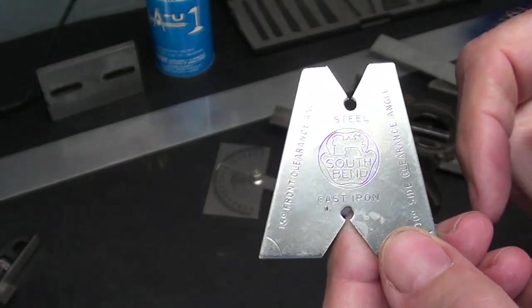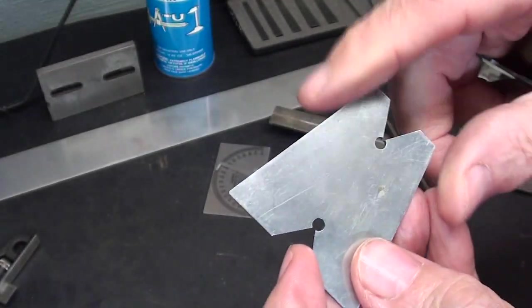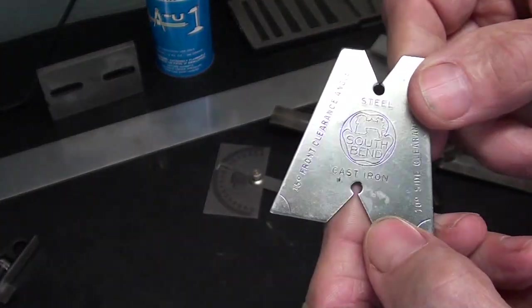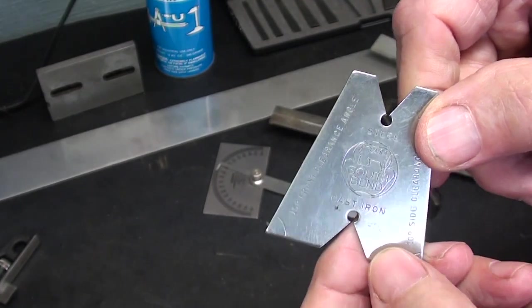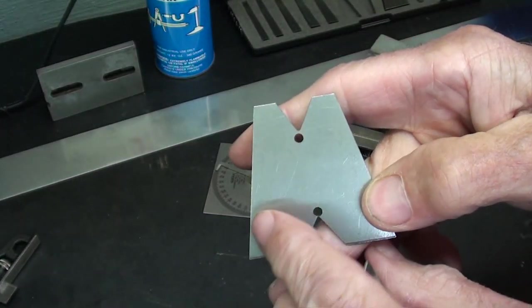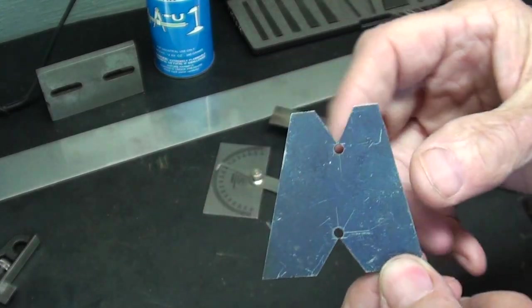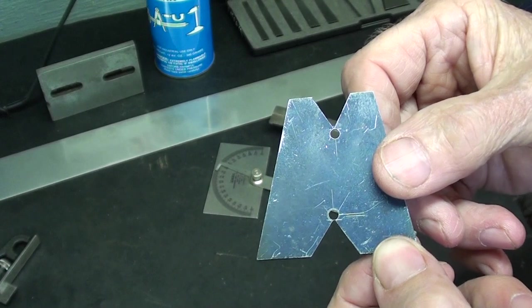This is an original South Bend grinding gauge that I happened to come across rather recently at an auction. And that's what we're going to make. And I've already made a prototype. And you can use about any kind of material you want. You could even use cardboard, for crying out loud.